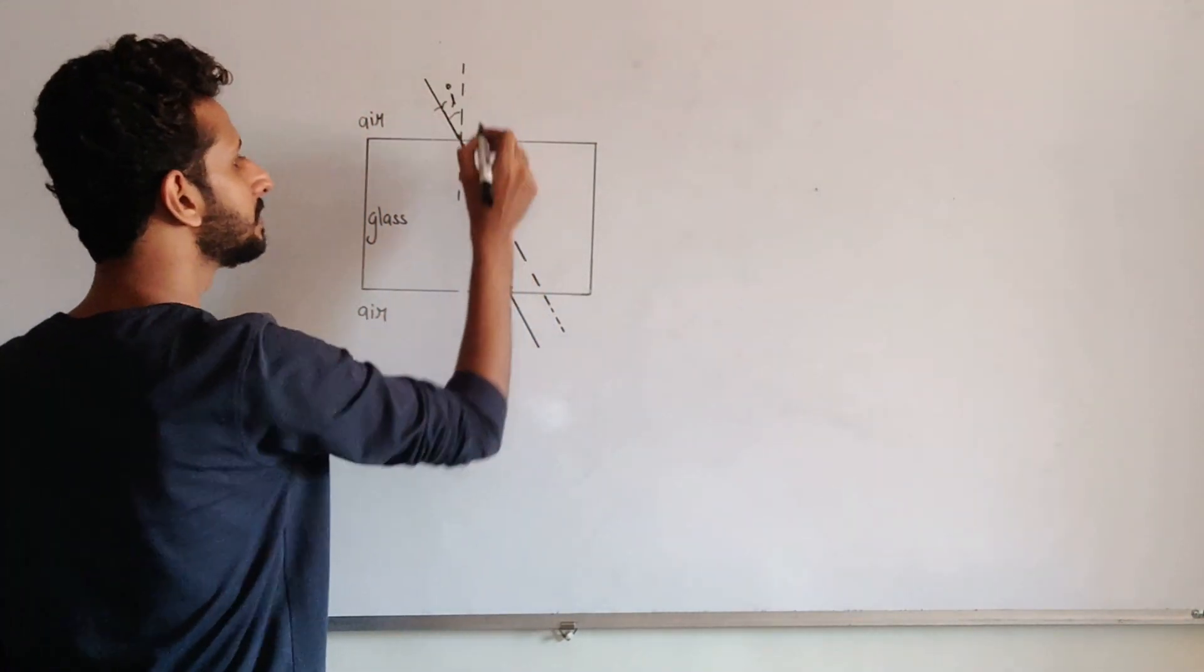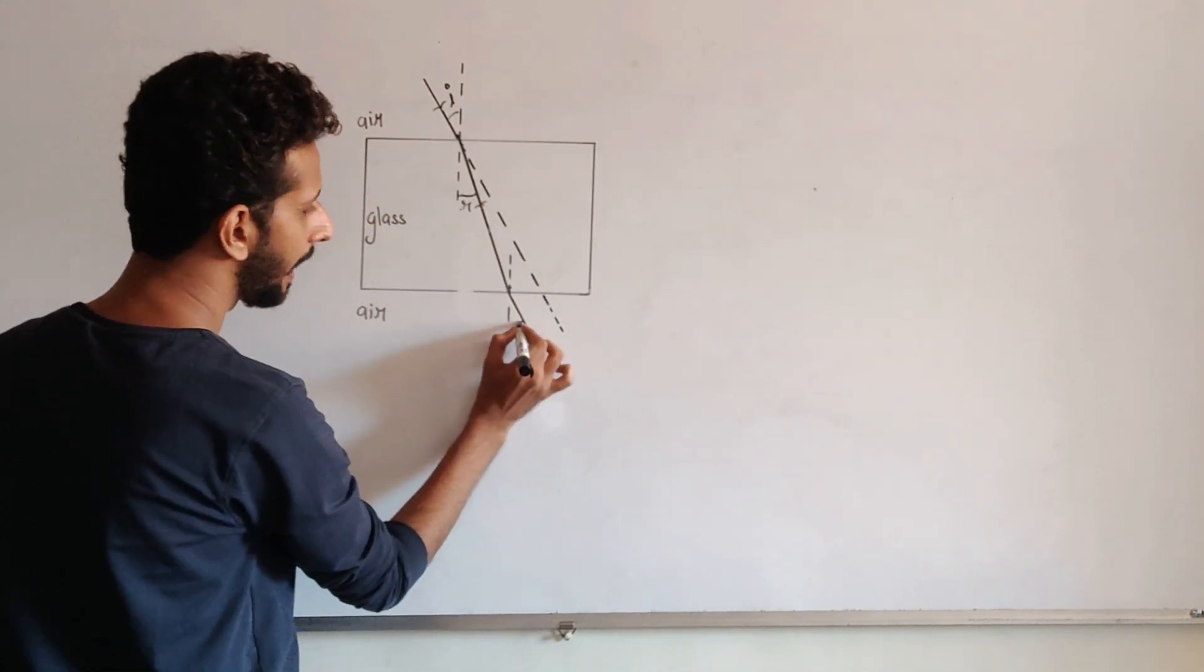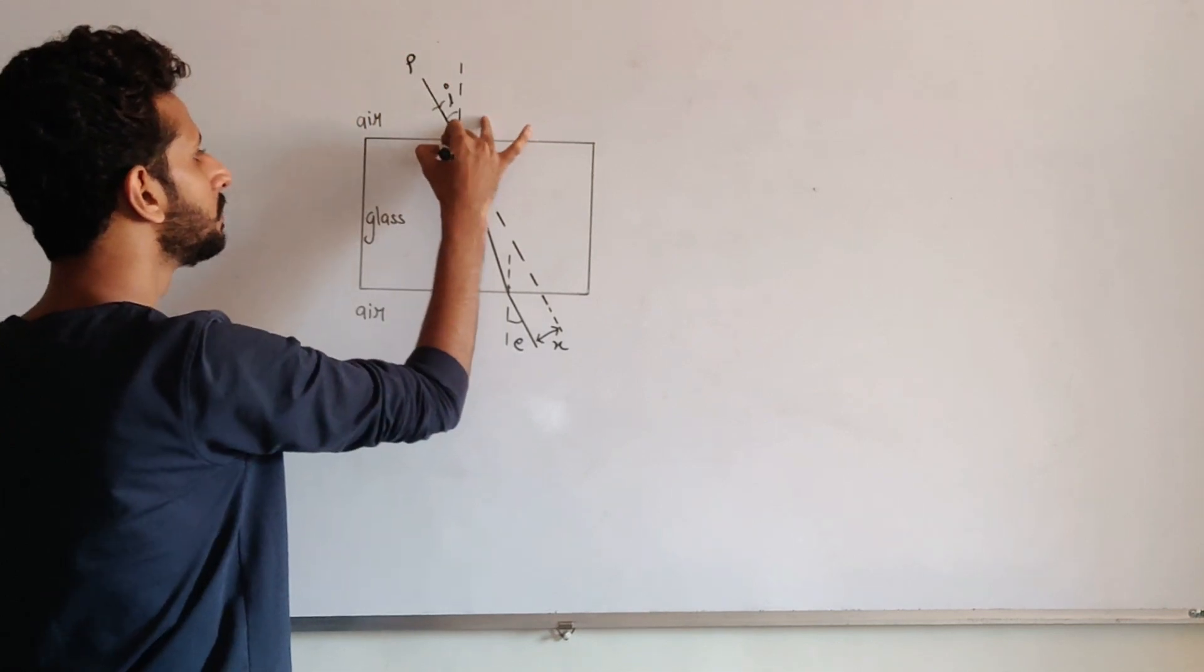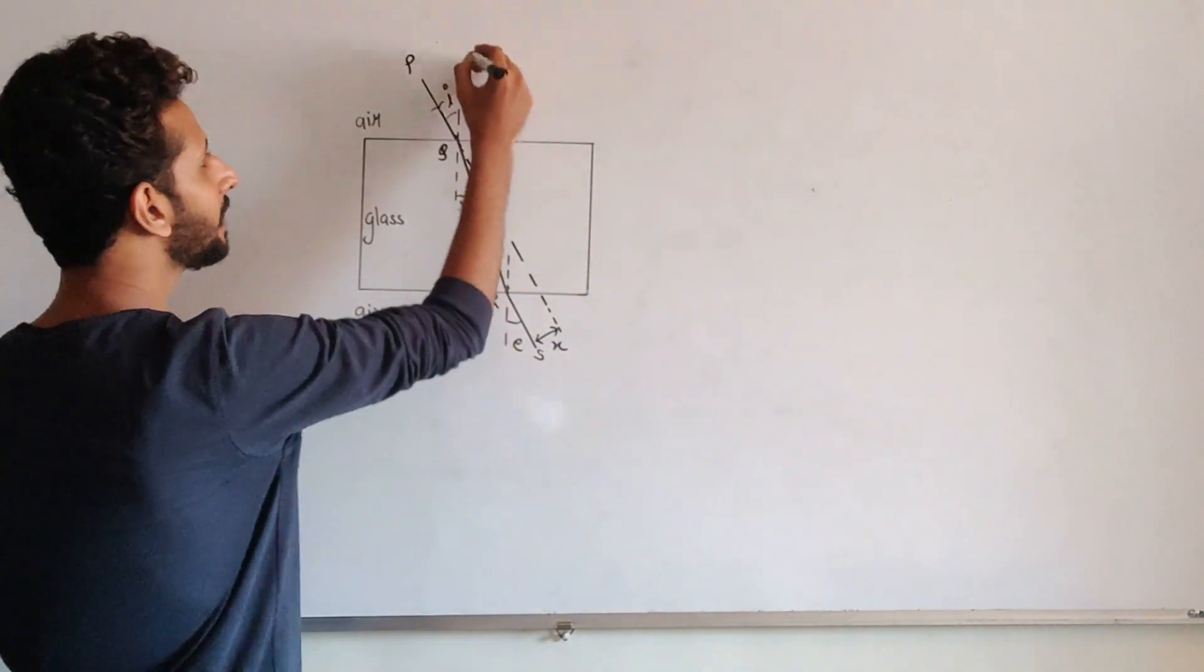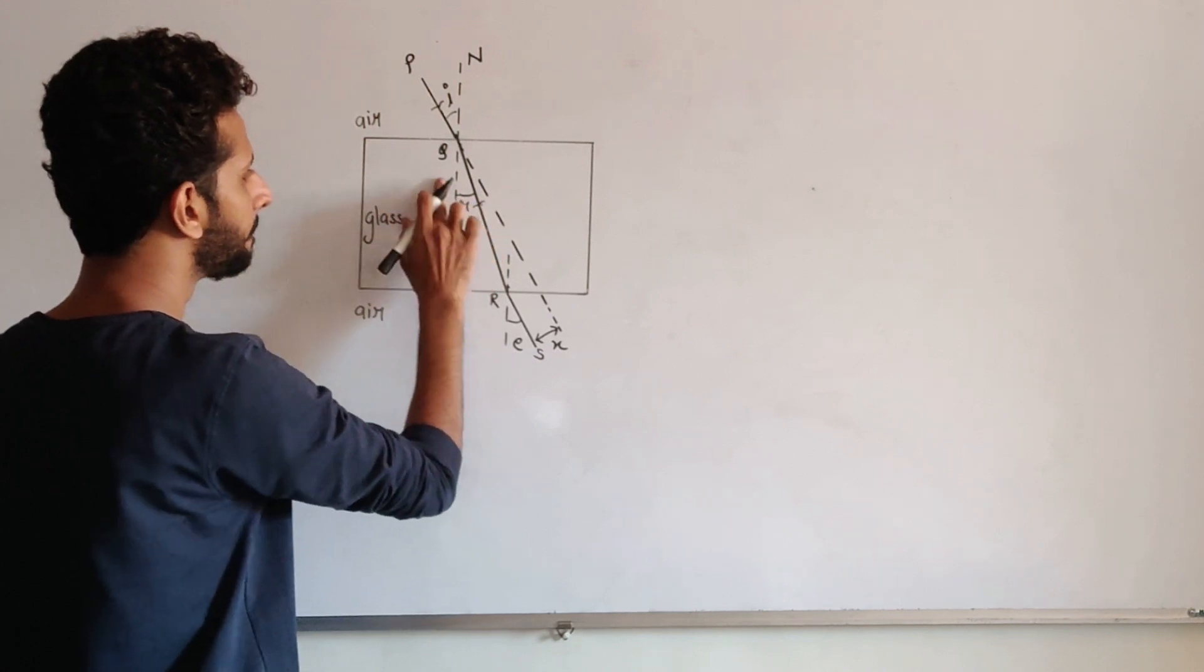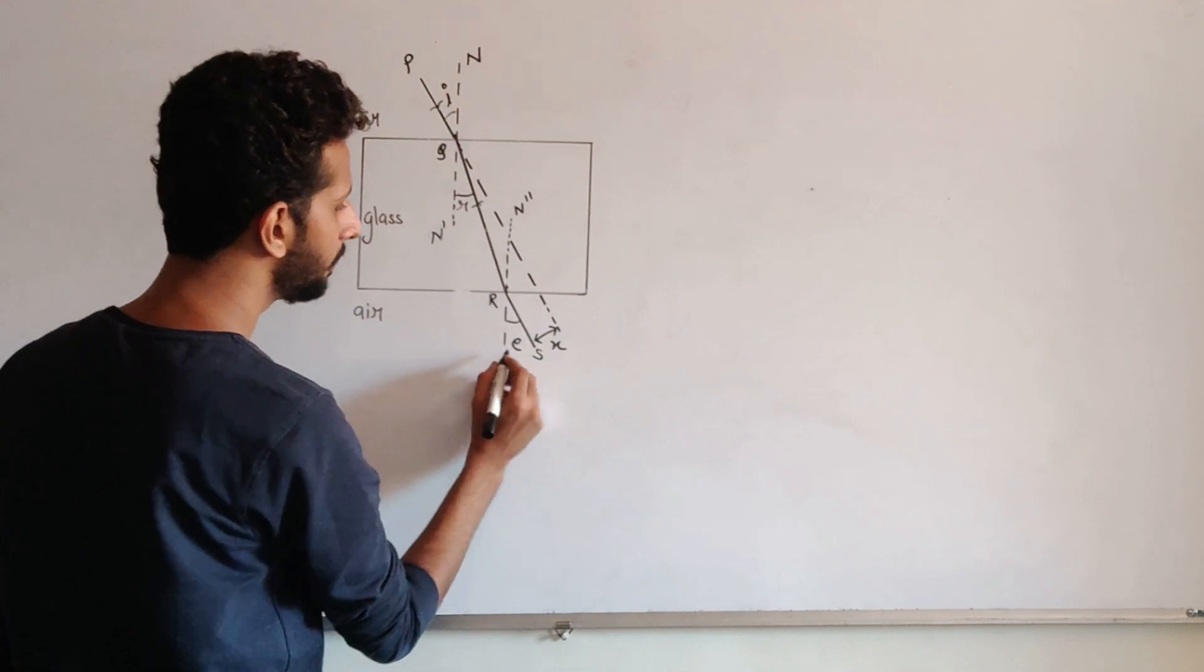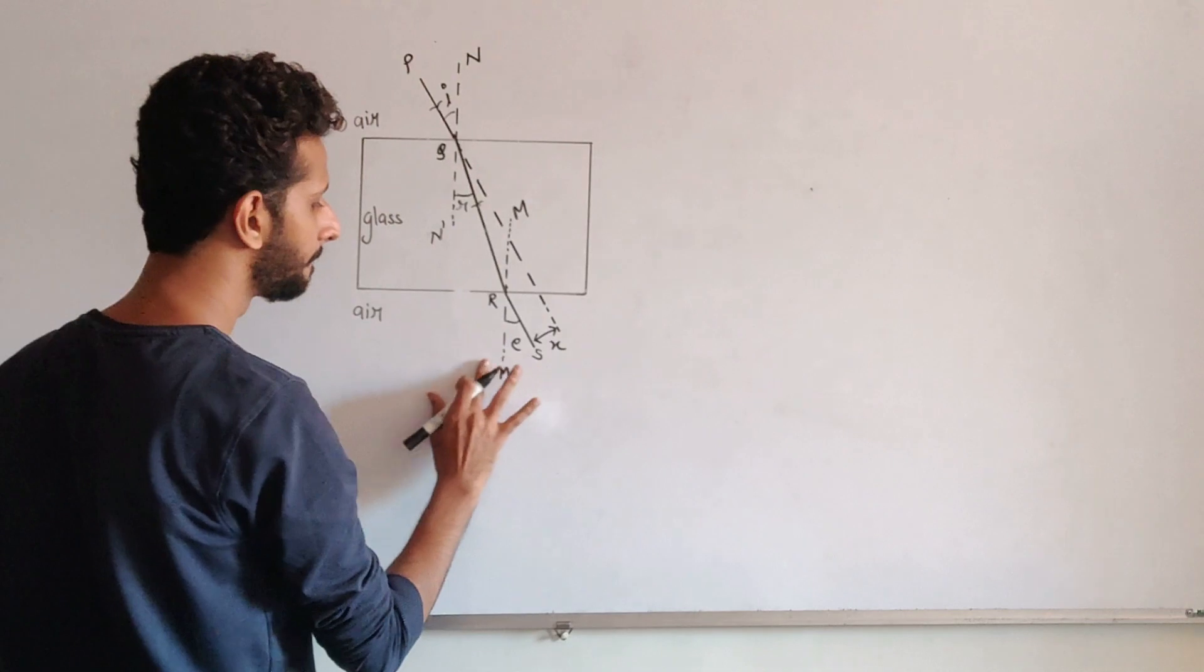Now mark the angle of incidence, the angle of refraction, the angle of emergence, mark the lateral displacement as x. Mark your incident ray as PQ, refracted ray as QR and emergent ray as RS. Also mark the normals as N, N prime, we will take N prime over here and this we can mark it as N double prime or you can also mark it as F and M prime. So here we can mark it as N double prime.